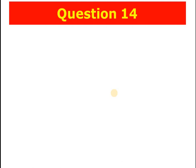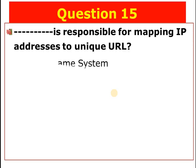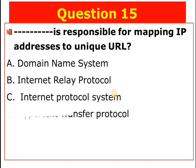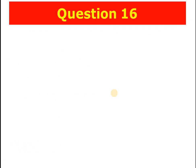Question number fourteen: What is the physical arrangement of a computer network called? A) Routing, B) Topology, C) Networking, D) Protocol. The next question asks what is responsible for mapping IP addresses to unique URLs. A) Domain Name System, B) Internet Relay Protocol, C) Internet Protocol System, D) Hypertext Transfer Protocol. Choice A — Domain Name System — is the answer.